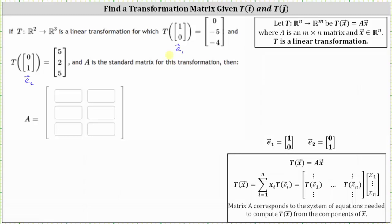Since the transformation of the vector E sub 1 is equal to (0, -5, -4), that is the first column in the standard matrix for this transformation. And since T of the vector E sub 2 equals (5, 2, 5), that is the second column of the standard matrix for this transformation.